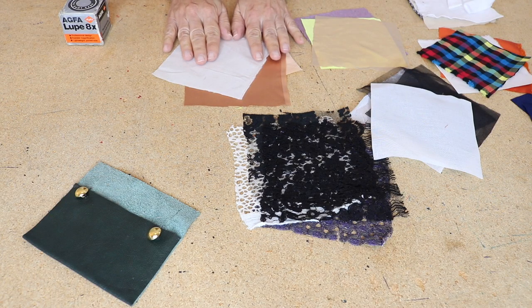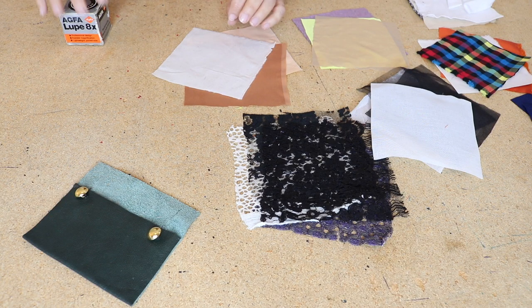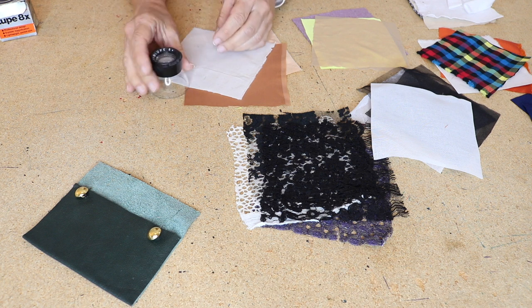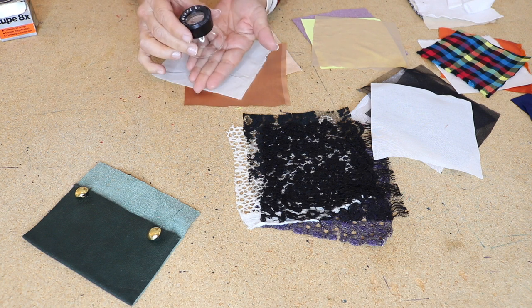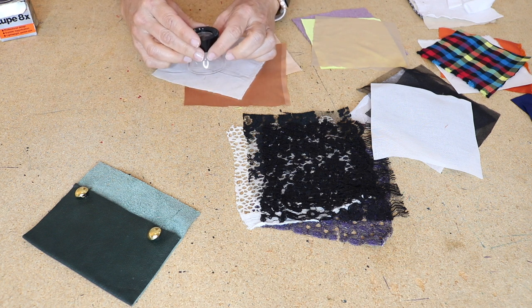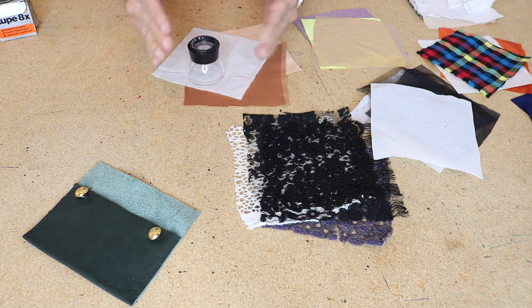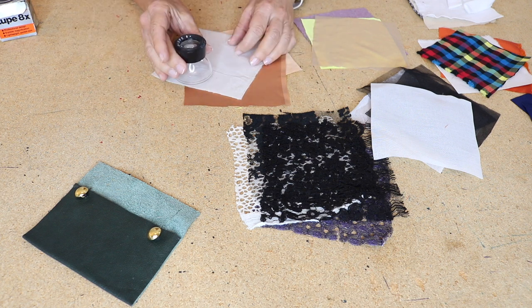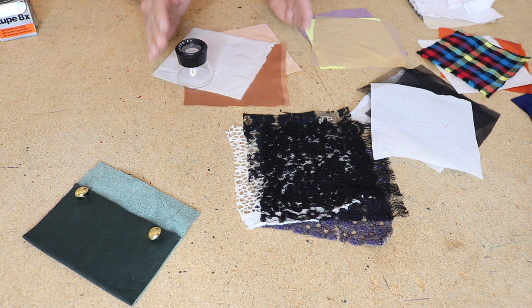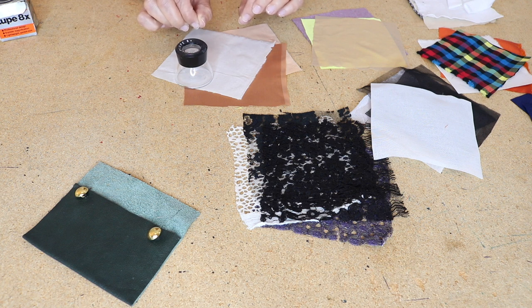Before I get started, I want to tell you that you're going to need a certain tool. This is what I have. This is called a loop. This is a special device, a magnifying glass that I'm able to do my photo editing when I have small images. If you don't have something like this, you're going to want to just get a small magnifying glass. Trust me, you're going to want to get it so you can learn about the different weaves and fibers.